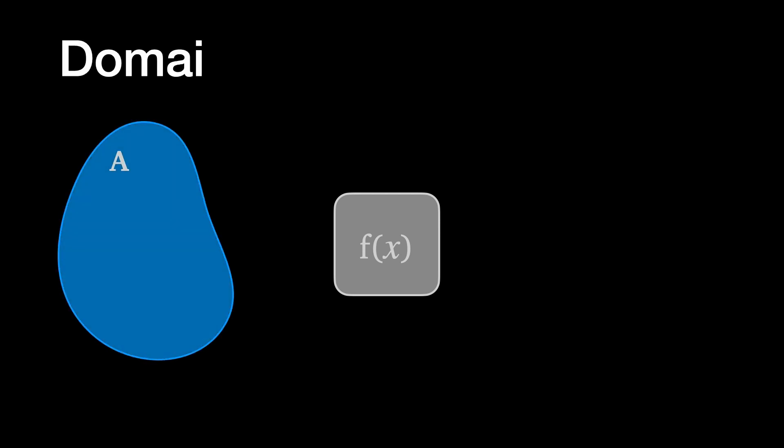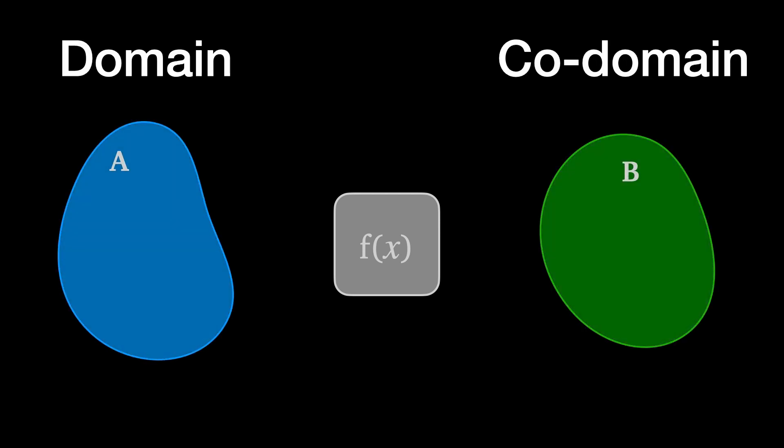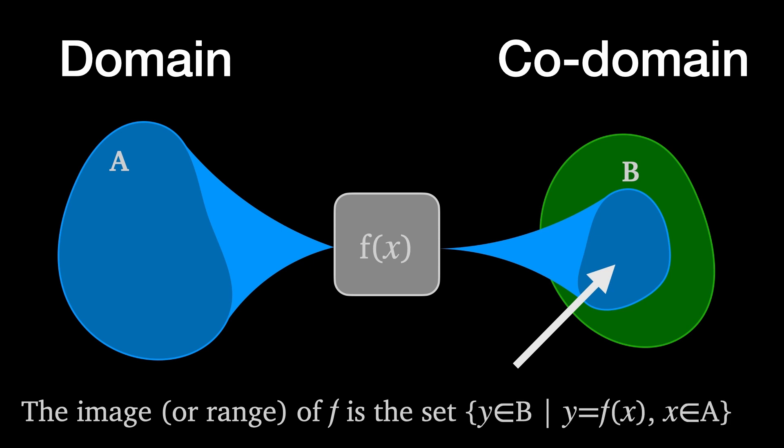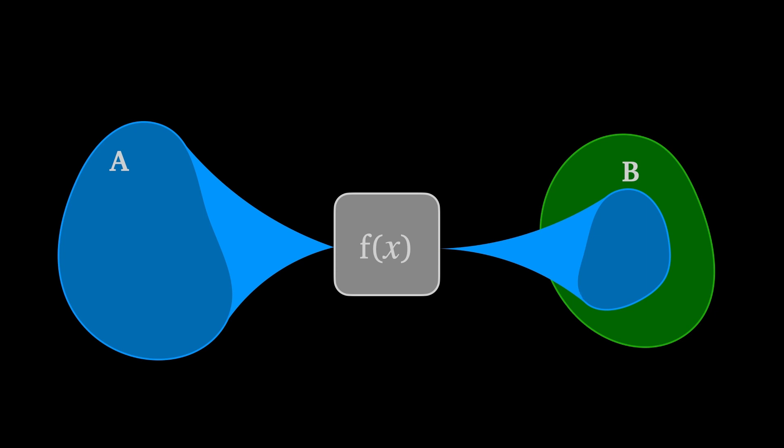A function f from set A to set B maps A onto a subset of the set B. We call A the domain of the function and B the co-domain. The subset of B that f maps A onto is called the image of f and that's defined as the set of all elements y in B such that y is of the form f(x) for x in A.